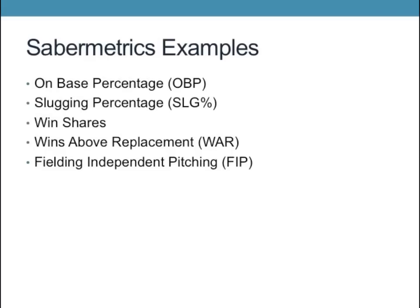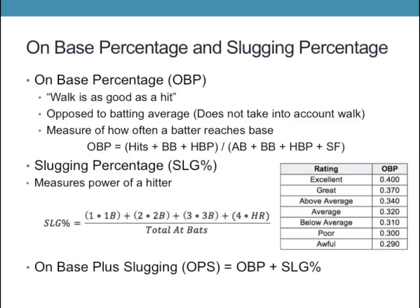Some sabermetric examples we're going to talk about are on-base percentage or OBP, slugging percentage, win shares, wins above replacement also known as WAR, and fielding independent pitching also known as FIP. Most people have probably never heard any of these since they require very complicated formulas and are difficult to understand. Anyone can understand that 73 home runs in a season is a lot, but what about a WAR of plus 8.9? The first two we're going to talk about are on-base percentage and slugging percentage.